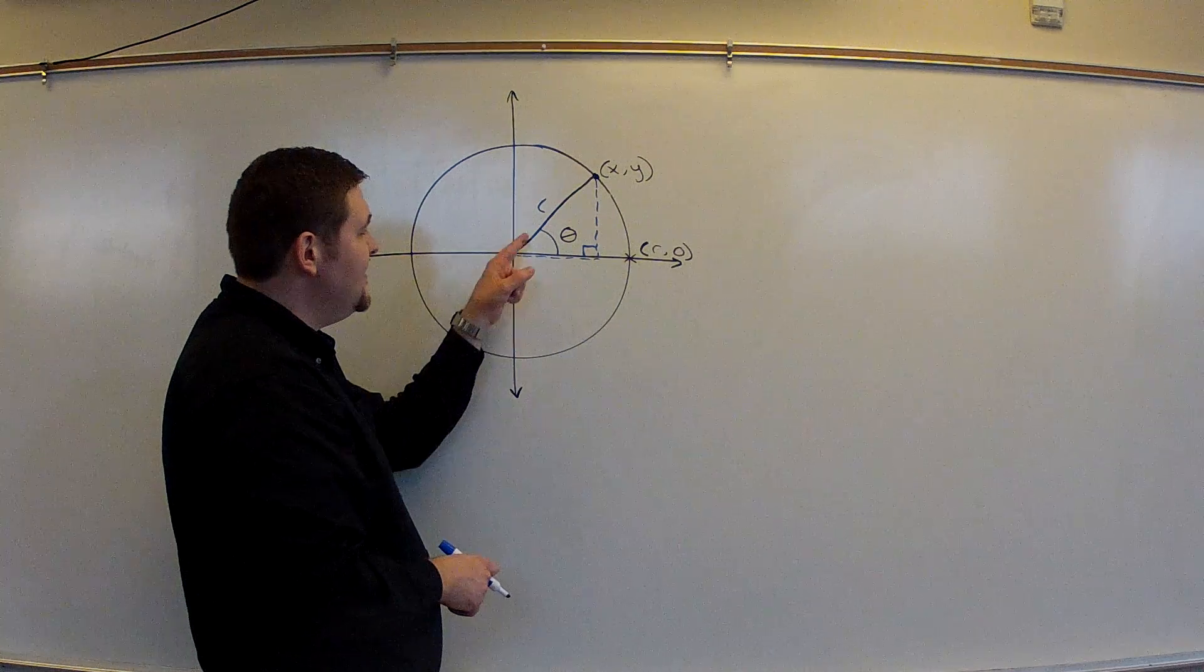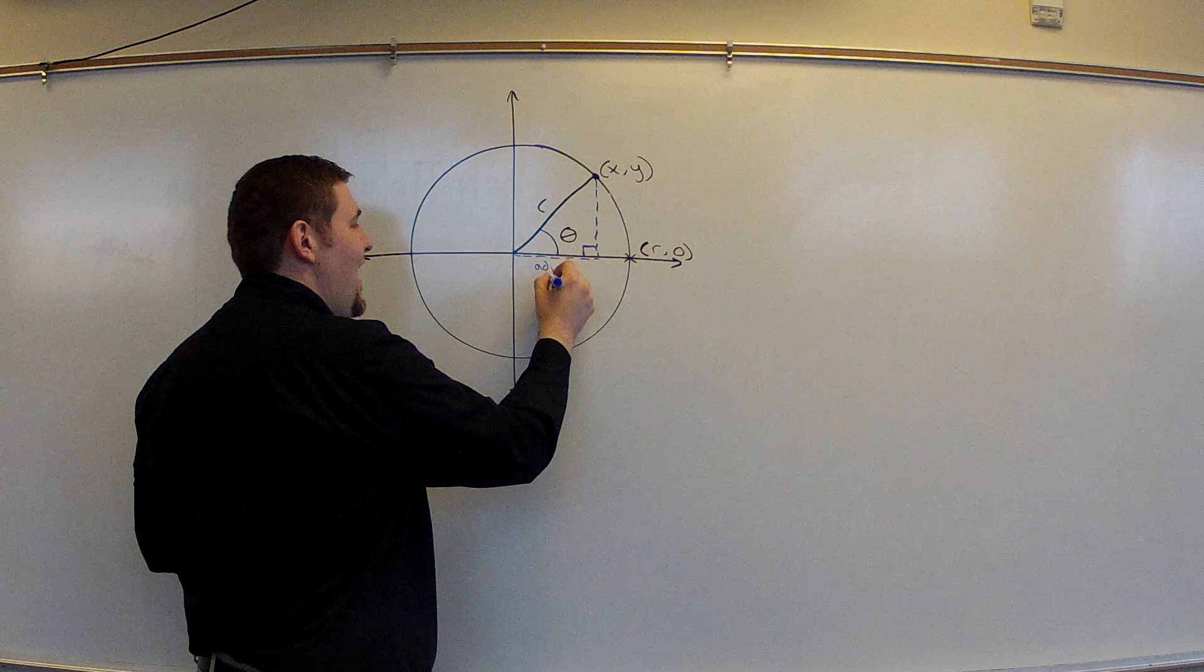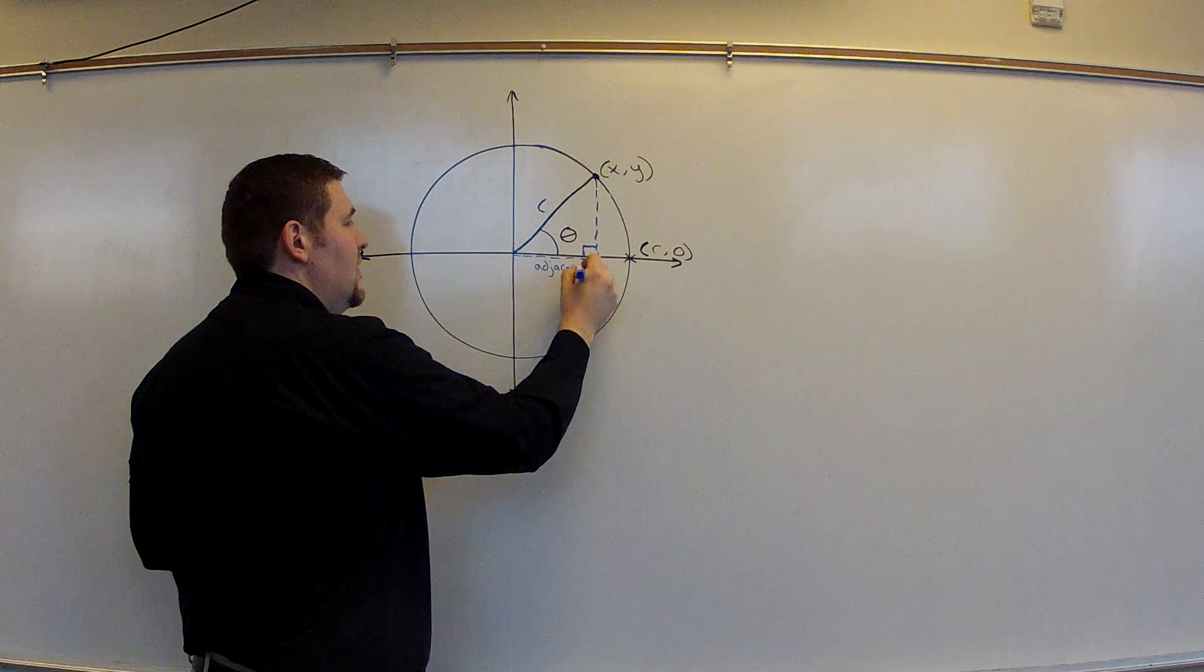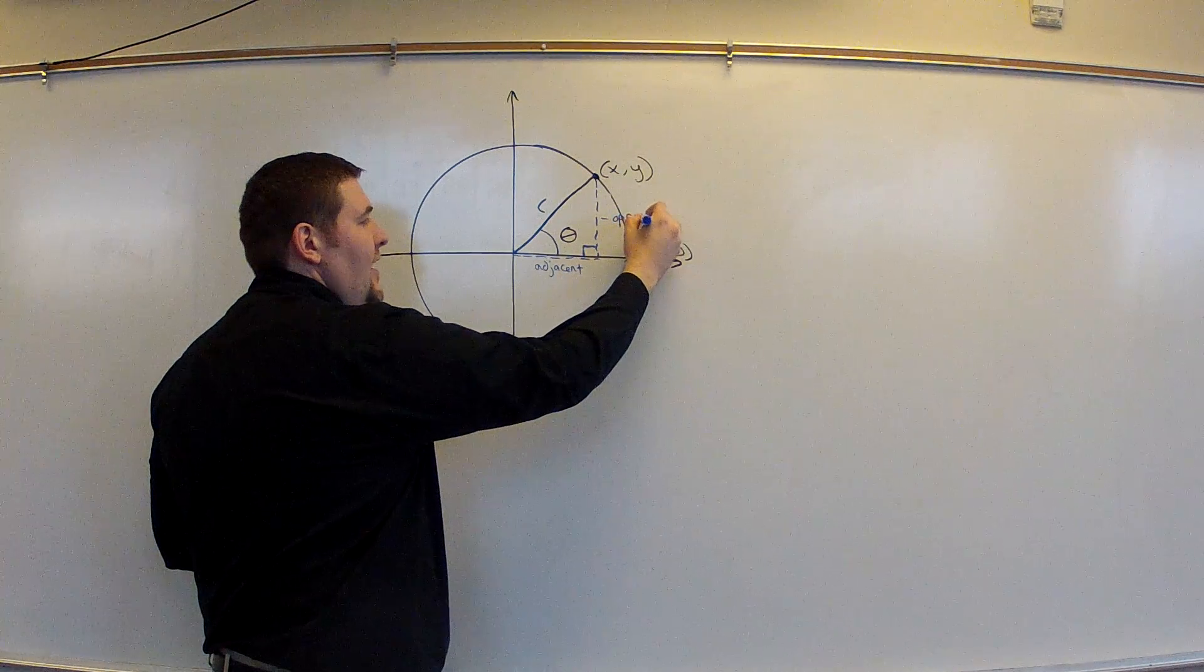So if this is my angle, the x value, the horizontal piece, that is the adjacent side to a right triangle. And the y value, the vertical piece, would be the opposite side of a right triangle.